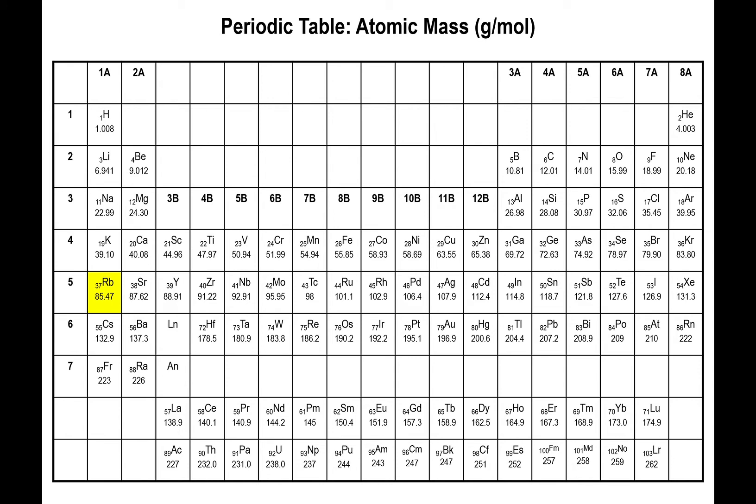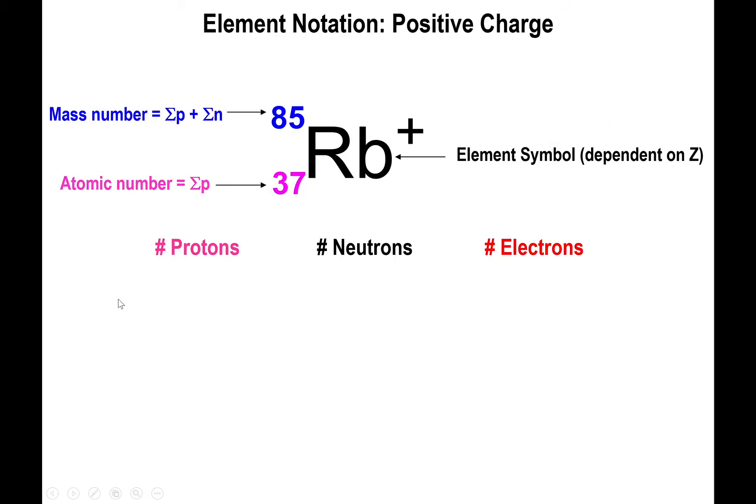All right, let's take a look at another example. This time we look at rubidium, which has atomic number 37, and atomic mass is roughly 85. All right, so if we're dealing with rubidium-85, well, we know right out of the gate, because this is rubidium, atomic number has to be 37. And if the atomic number is 37, that tells us that we have 37 protons automatically.